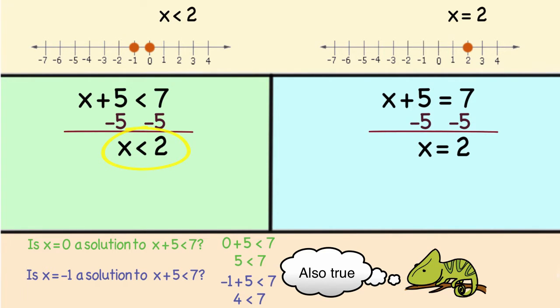Going back to my original solution, I have to shade all numbers that are less than 2. So I've shaded in 0, negative 1, negative 2. In other words I have to shade in all the numbers, not just the integers.